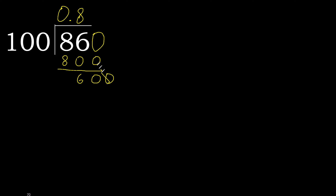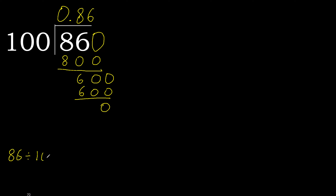Point is here. 0 point. 600. 100 multiplied by 6 is 600, which is not greater. Subtract. 0 — therefore finished. 86 divided by 100 equals 0.86.